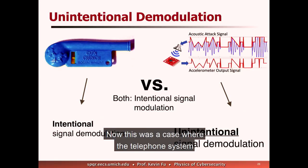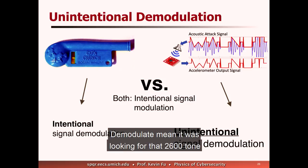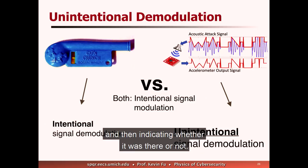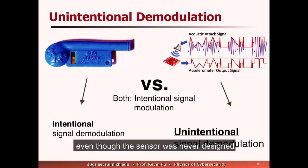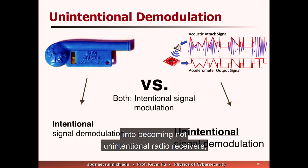That was a case where the telephone system intentionally demodulated the signal — it was looking for that 2600 tone and indicating whether it was present. What I'm about to tell you with sensors is you can do something very similar with sound even though the sensor was never designed to pick up this kind of stuff. We're going to be tricking sensors into becoming not unintentional radio receivers, but now unintentional acoustic demodulators.